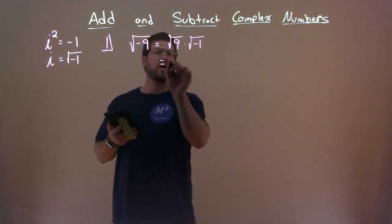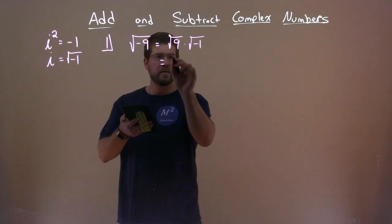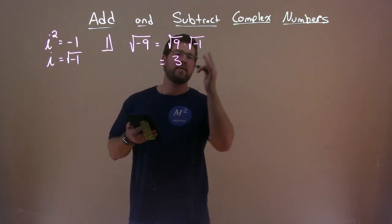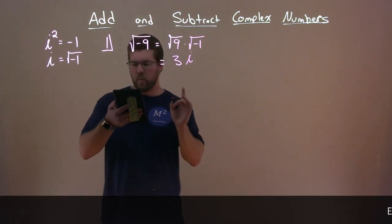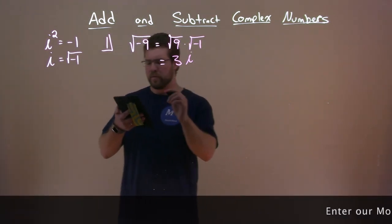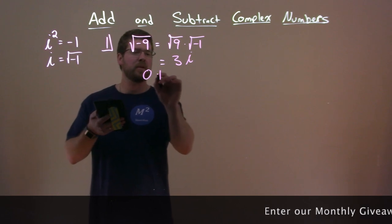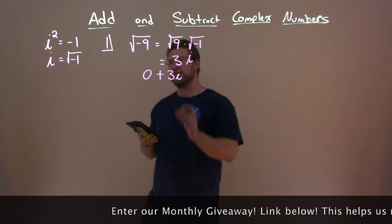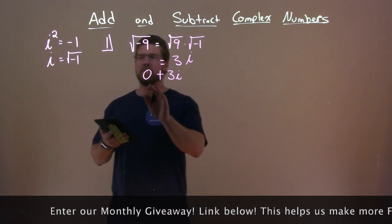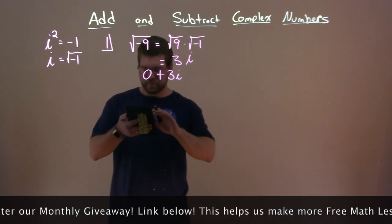And the square root of 9 we know is 3. And from what we learned earlier, the square root of negative 1 we can write as i. And so, in standard form, we would write this as 0 plus 3i. The a value there would be 0, and the b value is 3. So it would be 0 plus 3i.